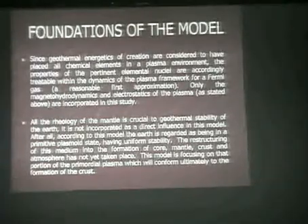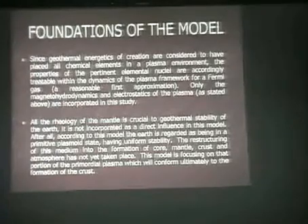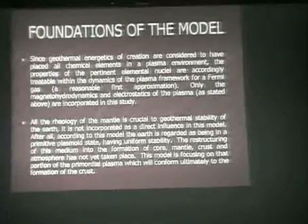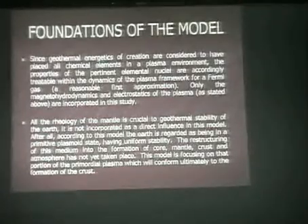Eventually the plasma becomes crust, mantle, and core. This model focuses on that portion of the primordial plasma which conforms ultimately to the formation of the crust. I don't know how the mantle got separated from the crust, and nobody really knows what the core is made of — there's only guesswork about its chemical composition. We don't know that the core is iron and nickel as presumed; we have no way of measuring that directly. All of that is indirect evidence, and I could probably find half a dozen element combinations that would satisfy the same criteria without being iron and nickel.